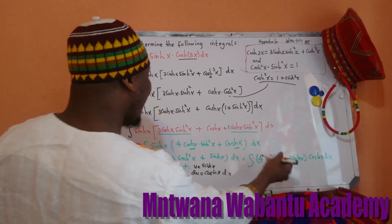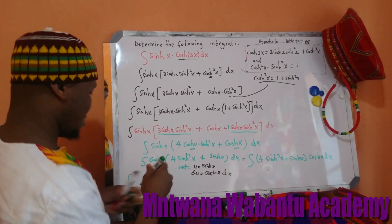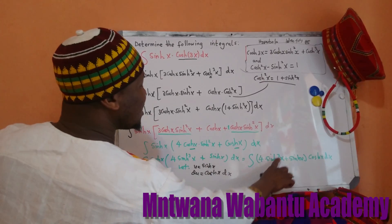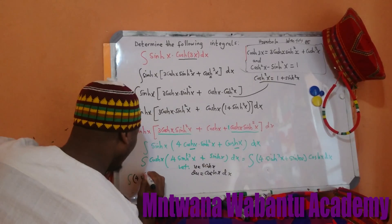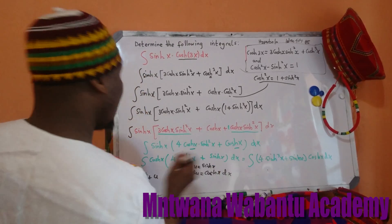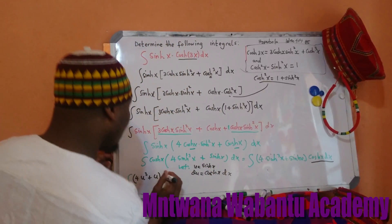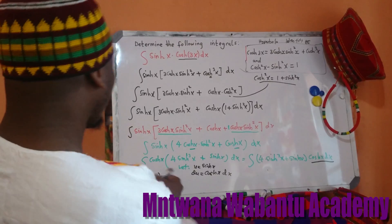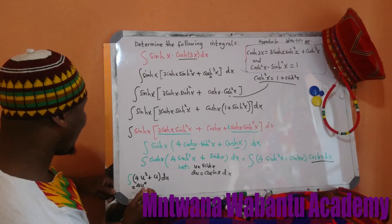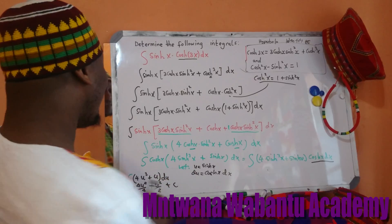Since u equals sinh(x), this integral becomes: integral of (4u³ plus u) du. Integrating: 4u to the power of four over four, plus u squared over two, plus constant. The four and four cancel, giving u⁴ plus u²/2 plus constant.